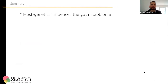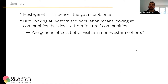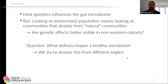To summarize: we think there is strong evidence that host genetics influence the gut microbiome, but we are looking at a western population, so it might be much more interesting to perform similar analyses in non-western populations. There we could potentially see more of the natural communities and get more signals from evolutionarily conserved patterns and interactions between the host and the microbiome. In general, the question we ask is: what defines or shapes a healthy microbiota? We try to address this from different angles — looking at genetics and also the evolutionary history of humans and their ancestors.